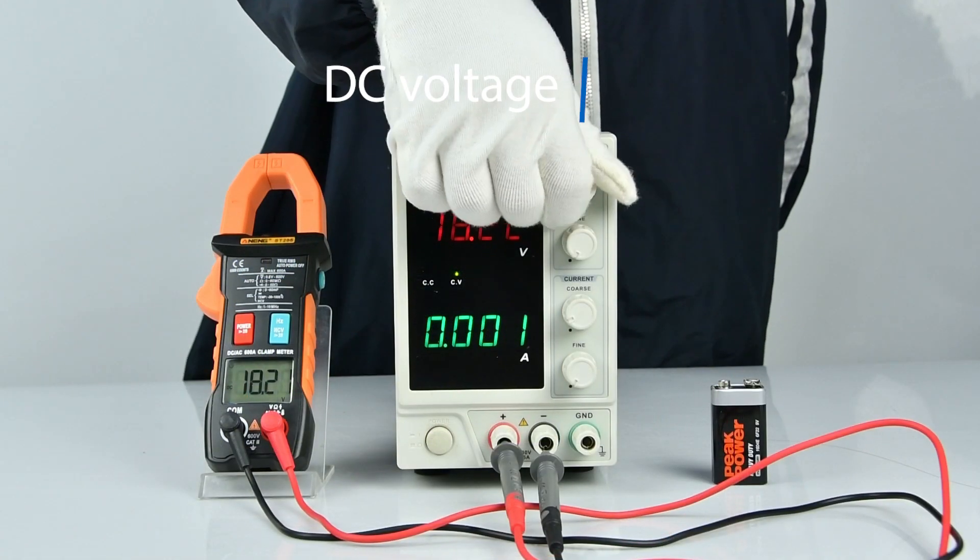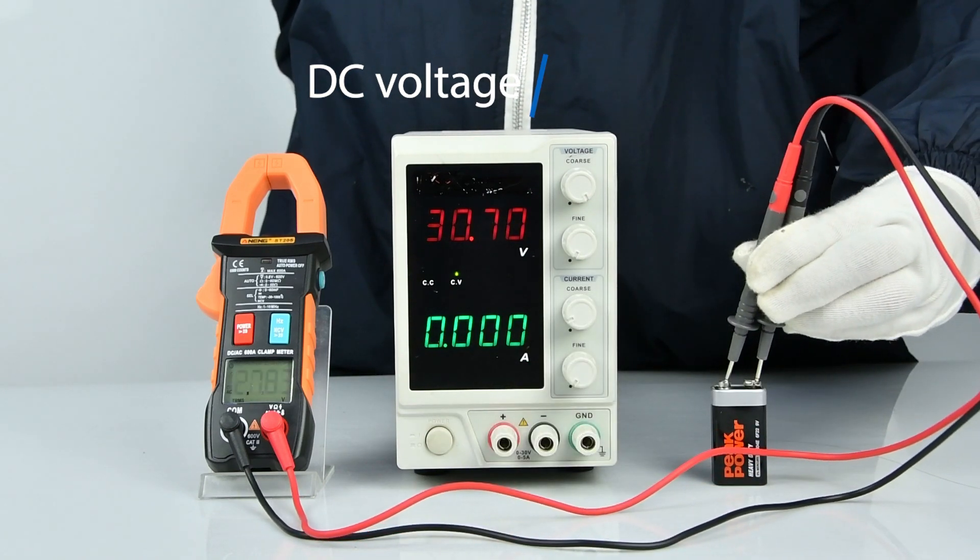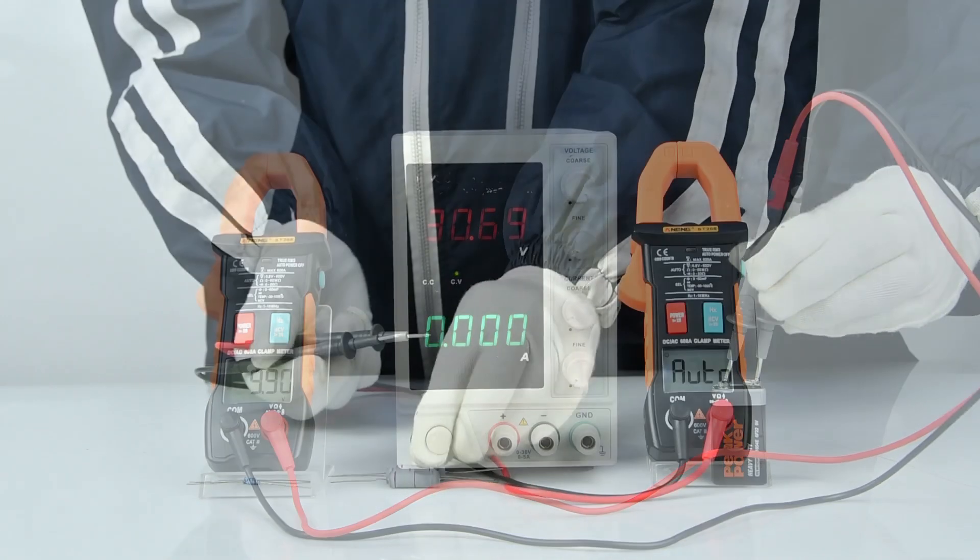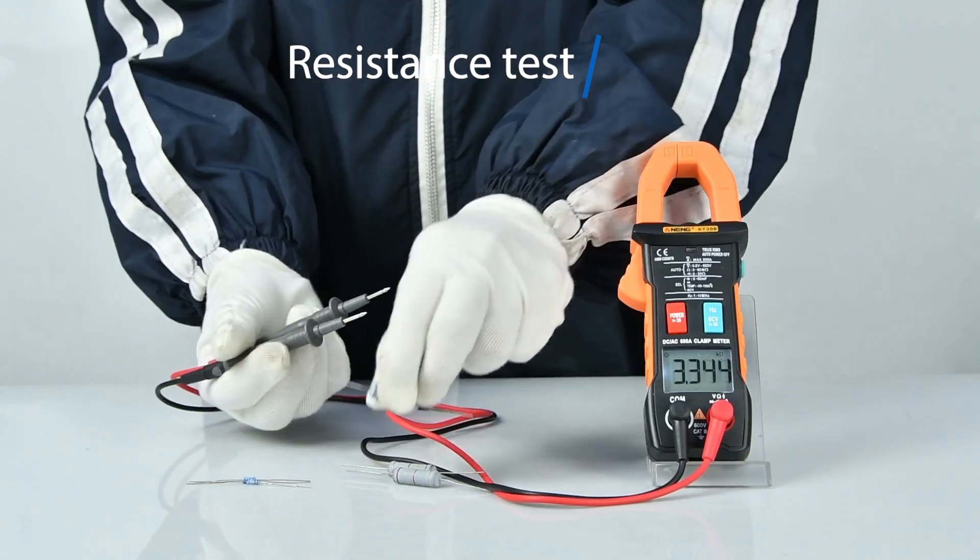DC voltage measurement: DC regulated power supply and battery measurement display. Resistance measurement: both sides can be measured.